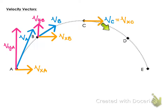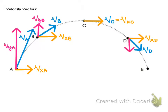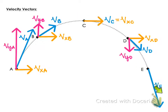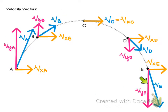Then it starts to come back down, speeding back up as it does. Here's the blue arrow, the total velocity at point D, which we can break into the horizontal and vertical components. And then finally point E, where the arrow is the longest since point C — it's moving the fastest on its downward portion of its path — and of course you've got the horizontal and vertical components of that velocity as well.